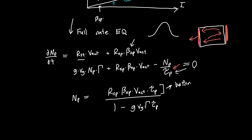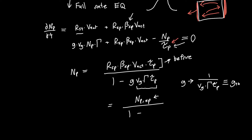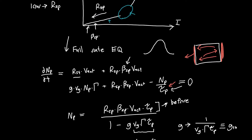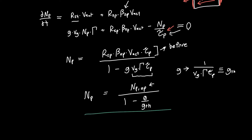The top term is just what we got before when well below threshold with spontaneous recombination dominant — I'll call this NP_spontaneous. From the above-threshold analysis, as stimulated emission becomes dominant, the gain approaches 1 over (Vg times gamma times tau_p), which we call the threshold gain. Cleaning up the expression, we get NP_spontaneous divided by (1 minus G over G_threshold). This equation describes the number of photons in the cavity in the intermediate region where neither spontaneous nor stimulated emission is solely dominant.